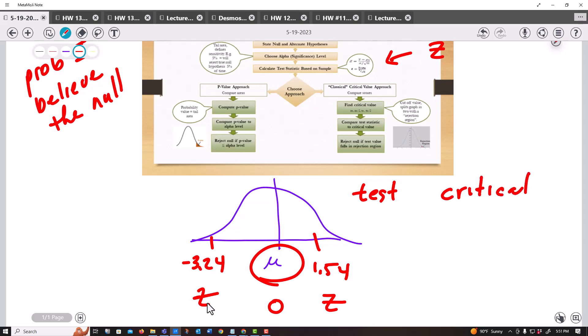And a critical value is found typically looking up in tables or using Excel based on an alpha. So say, whatever our alpha is, let's just say our critical value was 1.37 with this example right here.